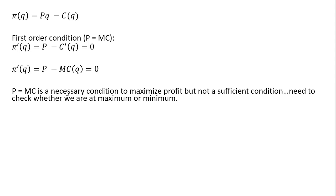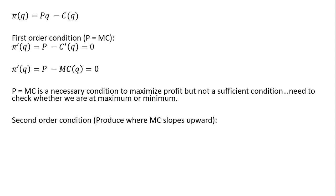Price equals marginal cost is a necessary condition to maximize profit; however, it is not a sufficient condition. We need to check whether we are at a maximum or a minimum point. To do that, we need to check the second order condition. What we're going to find is that in order to maximize profit, the marginal cost curve has to be sloping upwards.